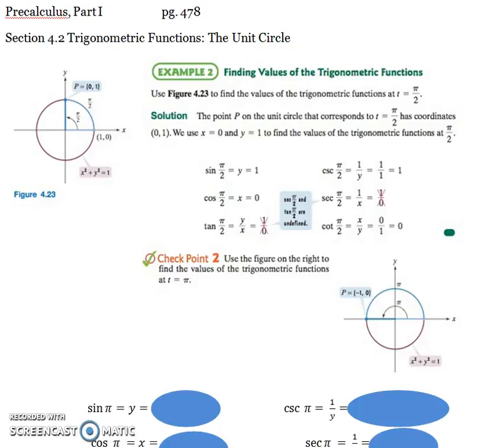This is literally talking about the points on the x and y axis in the unit circle. So for π over 2, that's the point up here on the y axis. And the point is 0, 1.